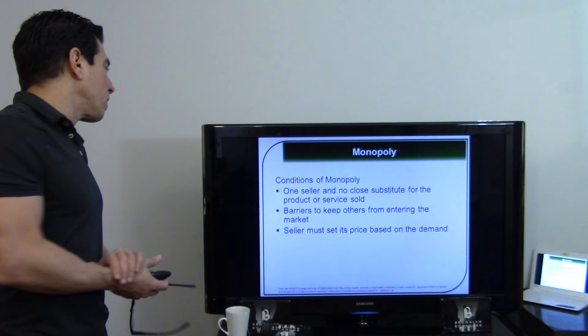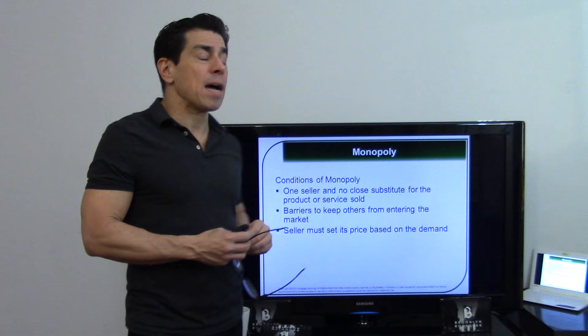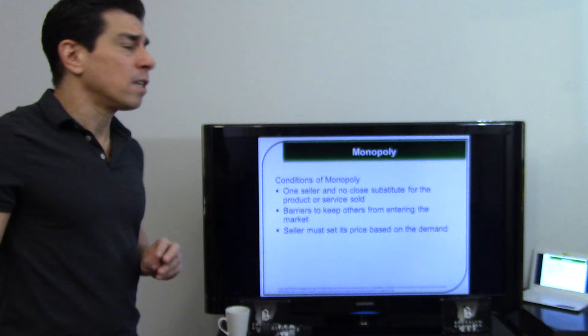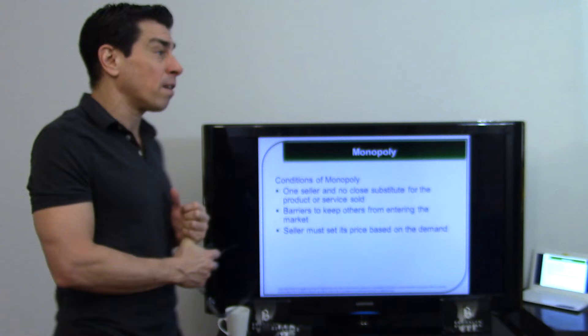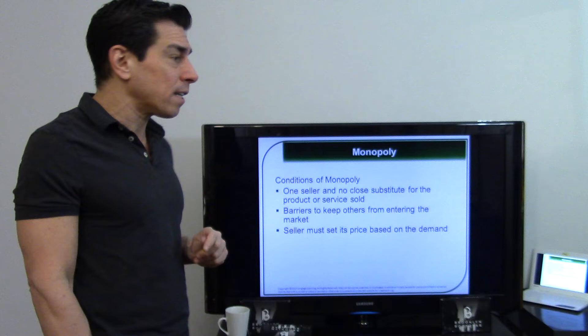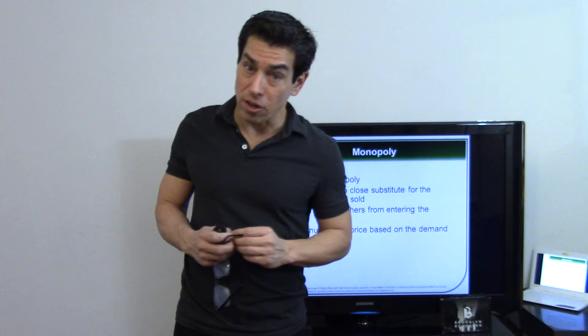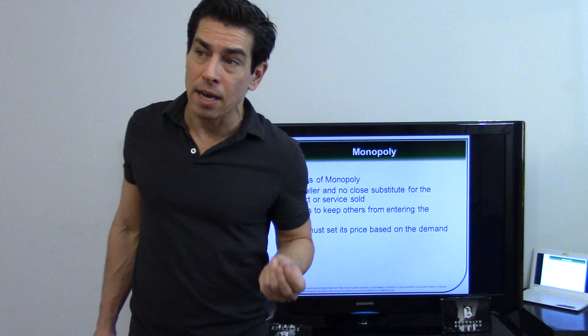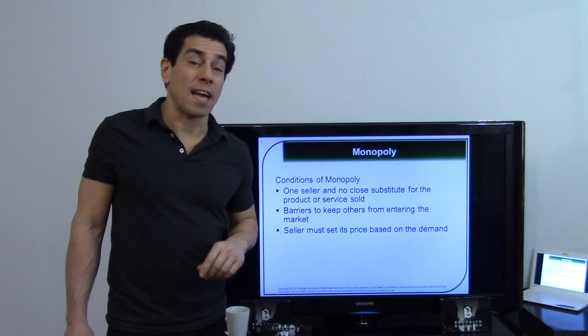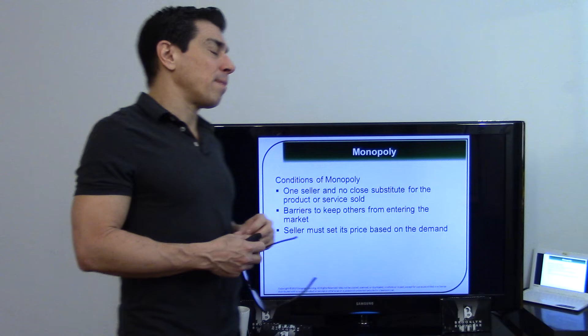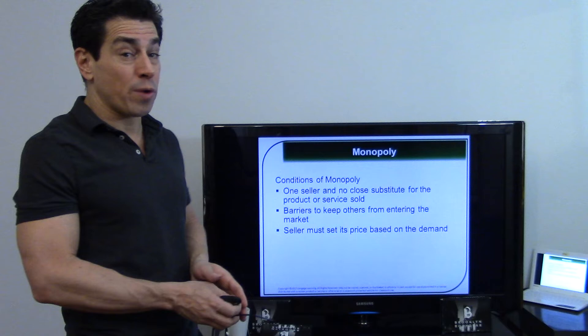Monopolies in the US are illegal, but the most famous example is De Beers — a cartel that controls all factors of production for diamonds. They kept competitors out by either buying up competing diamond mines or dropping prices to put them out of business. De Beers also created a marketing strategy making diamonds seem rare, though rubies and emeralds are actually rarer.